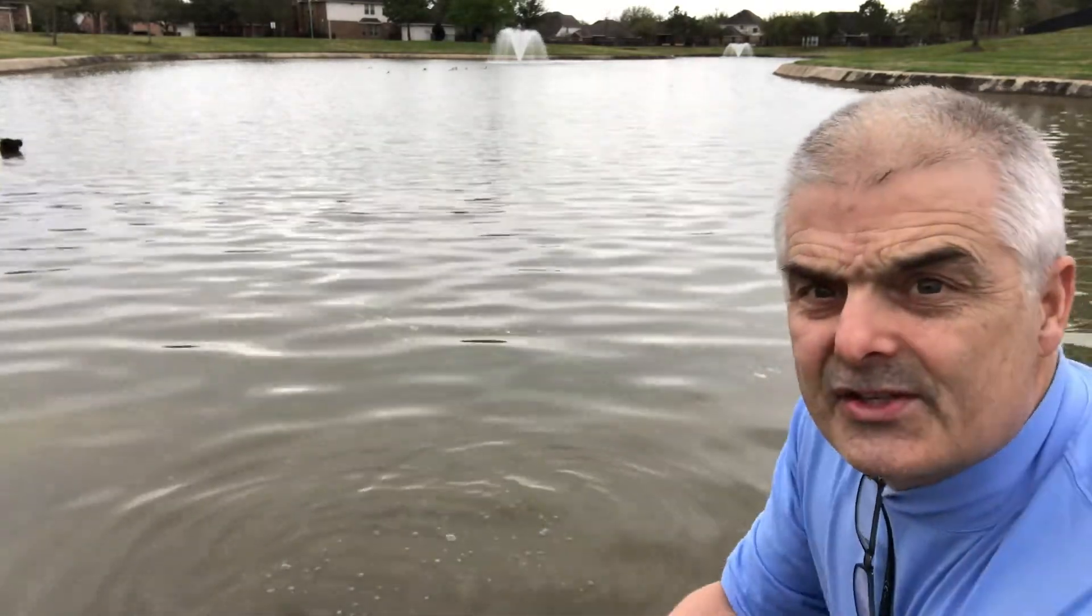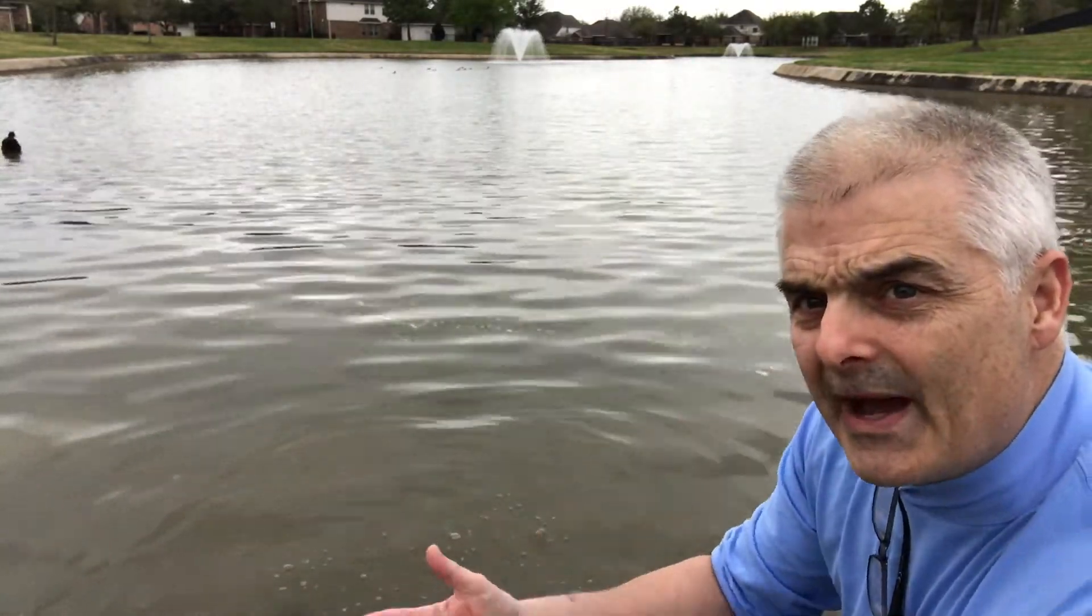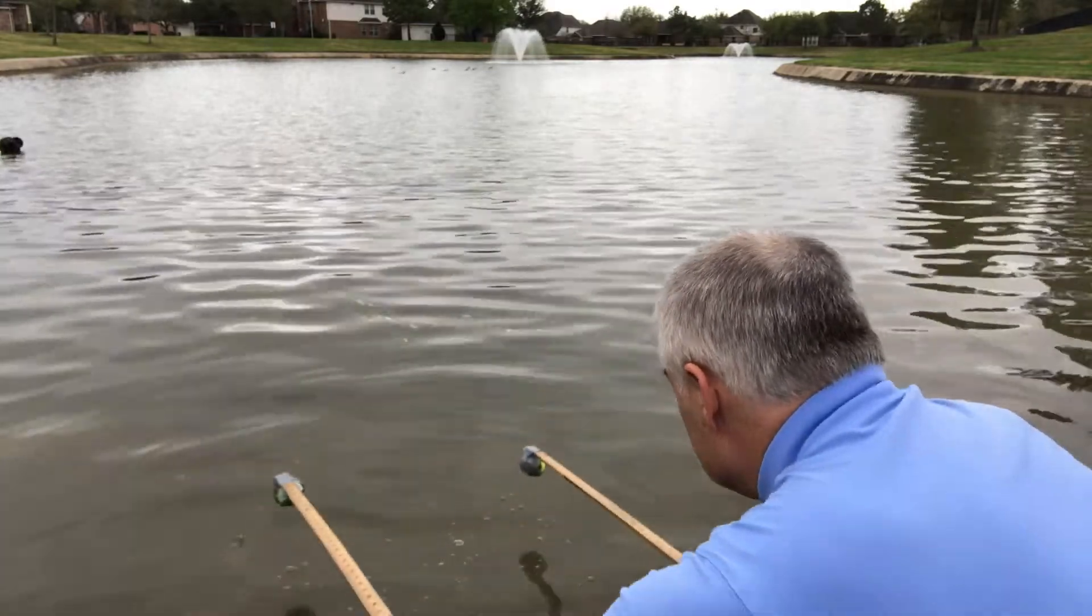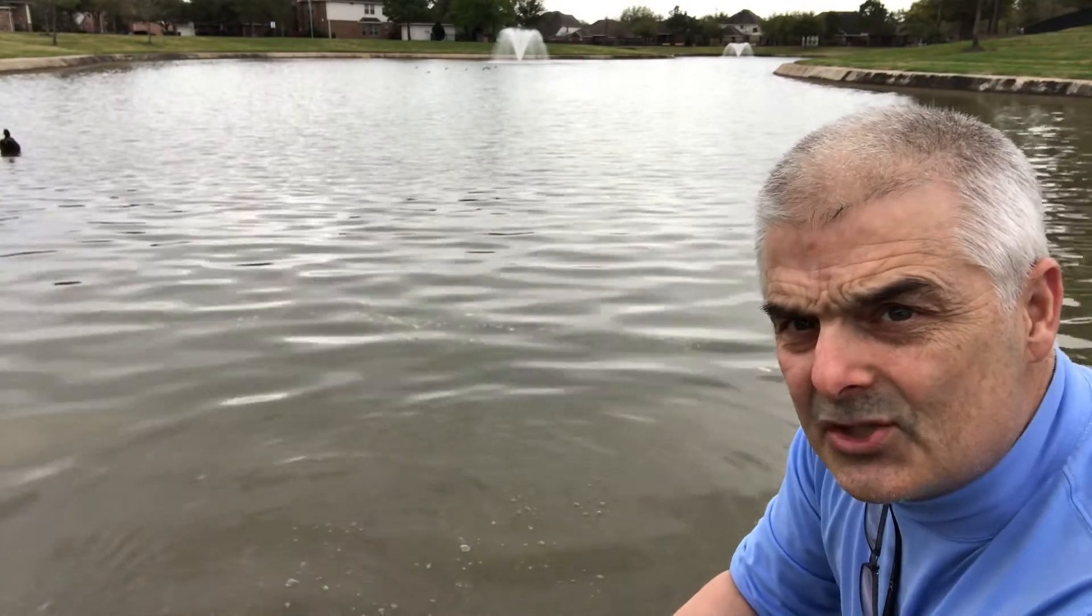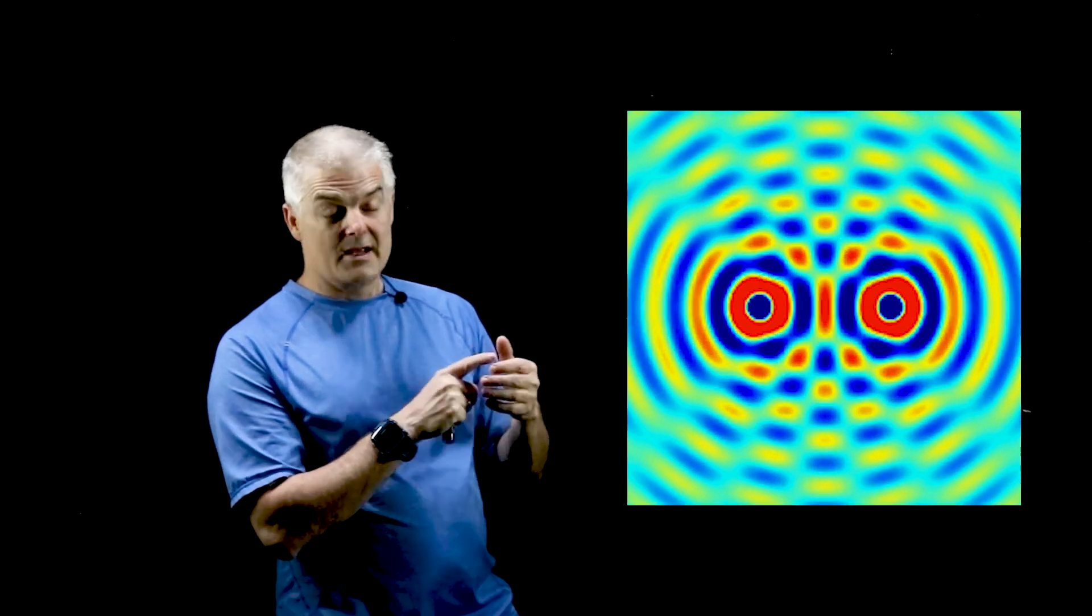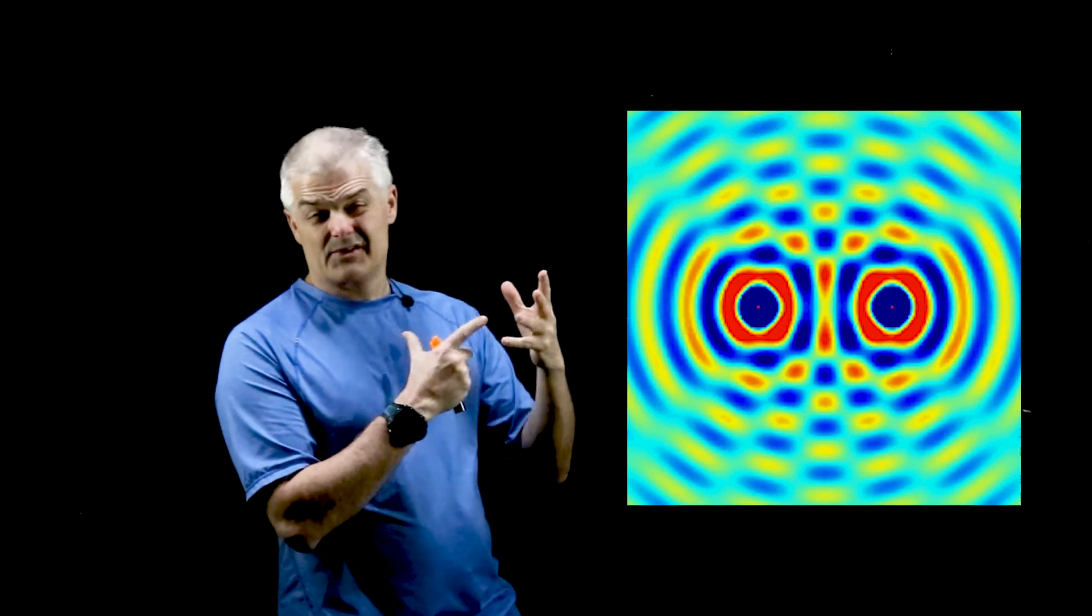Now notice that there's an interference pattern happening. Do this again. You're getting constructive and destructive interference at different locations. So you can see how that works with water and take a look at this image. And what you can see is you can see there are some places where you have constructive interference and then places where you have destructive. So you have kind of this weird, it's called an interference pattern. And it's very cool to see this.